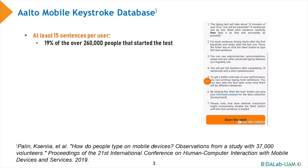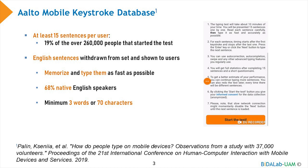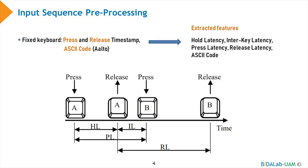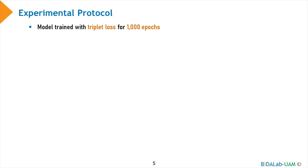The Alto mobile keystroke database comprises free text keystroke dynamics data from around 260,000 subjects. A mobile web application was implemented for data acquisition in a totally unsupervised way. Subjects were asked to read English sentences and type them as rapidly and accurately as possible on their own smartphones. In the present work, we select all subjects that have completed at least 15 acquisition sessions, around 60,000. From the raw keystroke data, we extract four features: the interpress time, interrelease time, hold time, and fly time, and we include the ASCII code related to each keystroke.